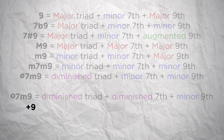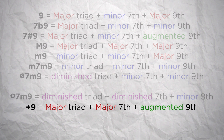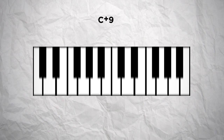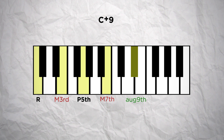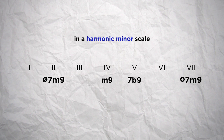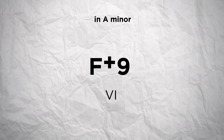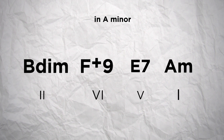The augmented 9th chord is made of a major triad with a major 7th and an augmented 9th — that can be noted plus 9 or augmented 9th. So for a C augmented 9th chord, that would be the root note C, the major 3rd E, the perfect 5th G, the major 7th B and the augmented 9th D sharp. That's a type of chord more often used in a minor tonality on the 6th degree. So in A minor, the 6th degree would be F and we could have this chord progression.